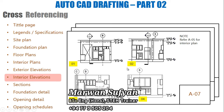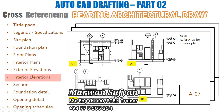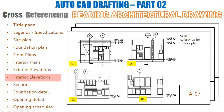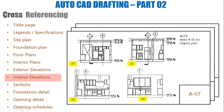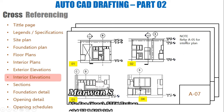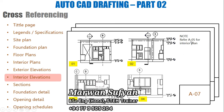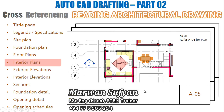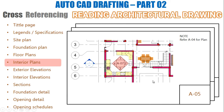Checking A07, here we can find all four elevations. In this interior elevation drawing there's a note that says 'refer A05 for interior plan.' Going back, that is the interior plan. This is called cross-referencing.